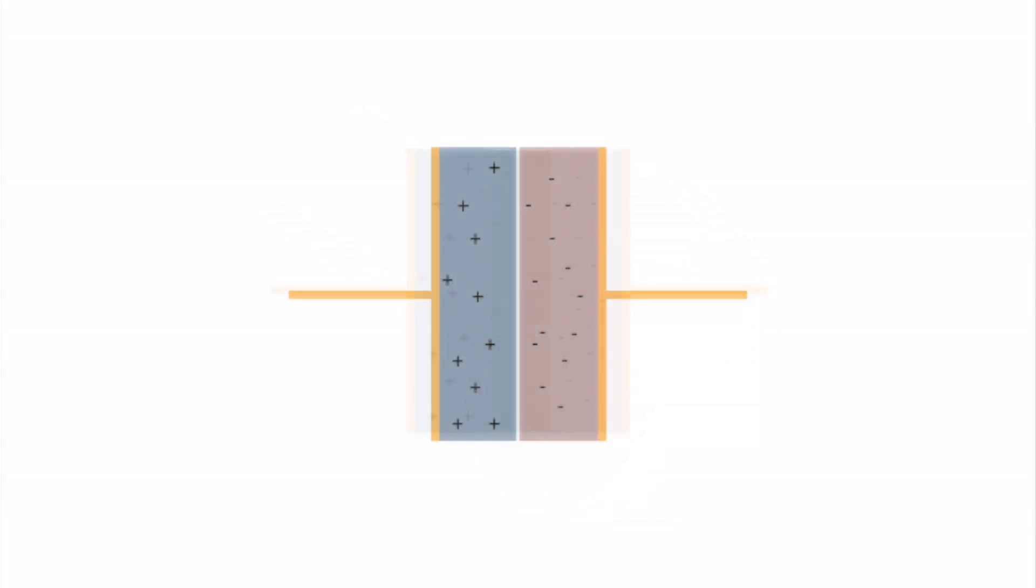A photodiode is a junction between a positively and negatively doped semiconductor, often with an intrinsic or undoped region in between.